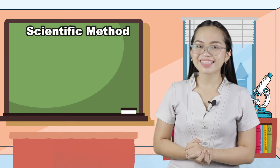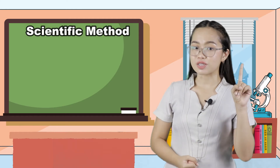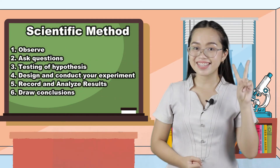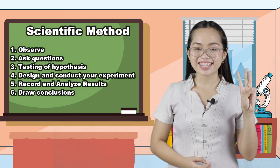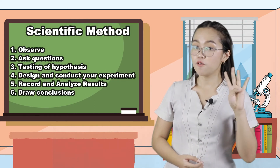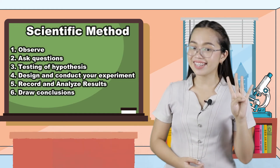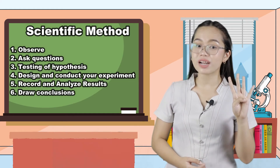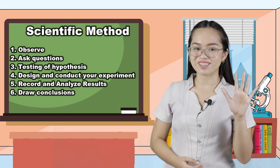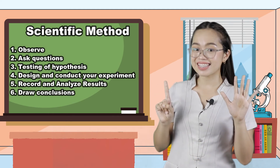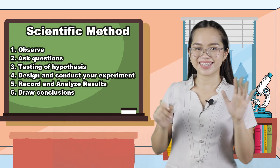The six steps are: first, observe; second, ask questions; third, testing of hypothesis; fourth, design and conduct your experiment; fifth, record and analyze results; and last, draw conclusions. Very good! Now get your pen and paper and let us have an activity.